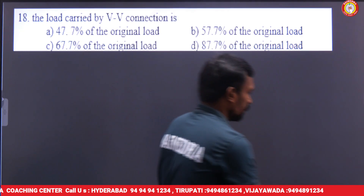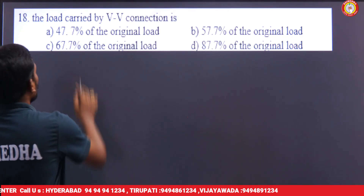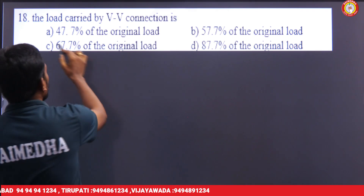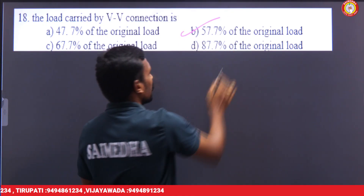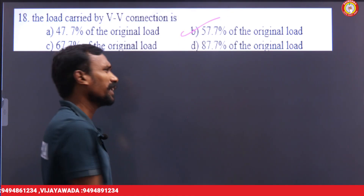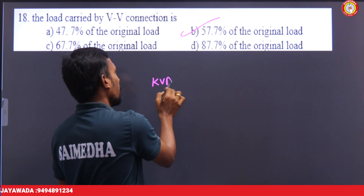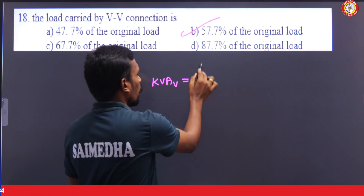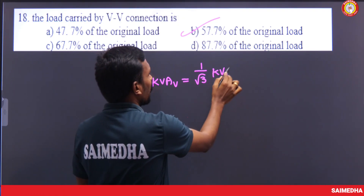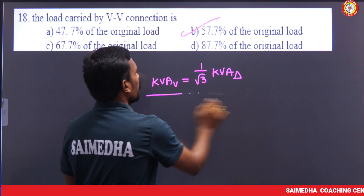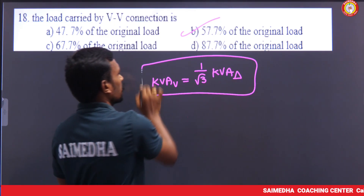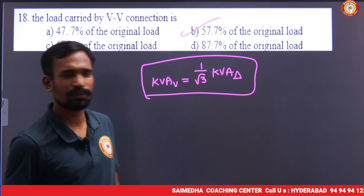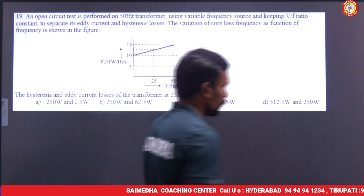The load carried by an open delta connection: the KVA of open delta equals 1 by root 3 times the KVA of the full delta, which is 57.7% of the original load.